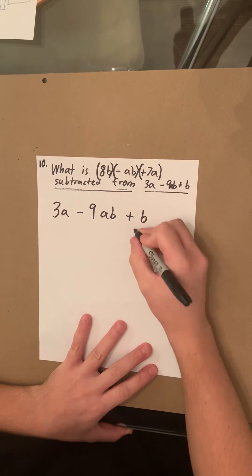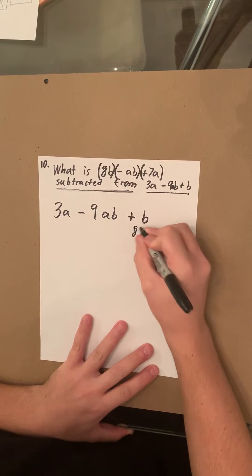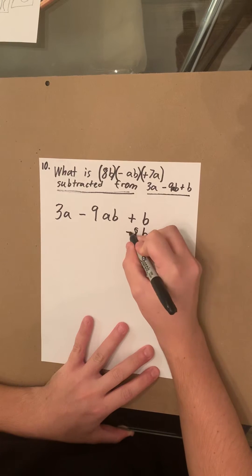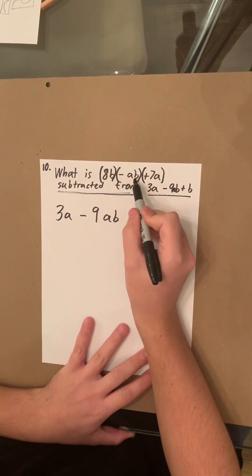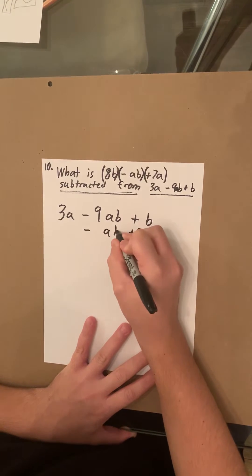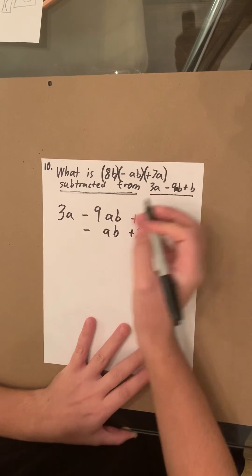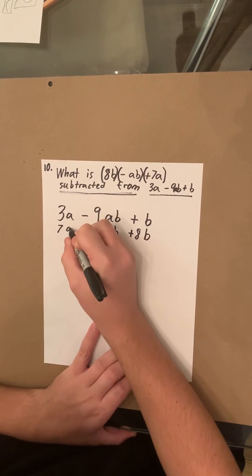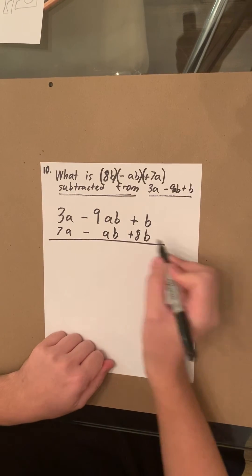So we have 8B. 8B was a positive. We have minus AB. AB is a negative. We have positive 7A. 7A is a positive. Now we're subtracting them.